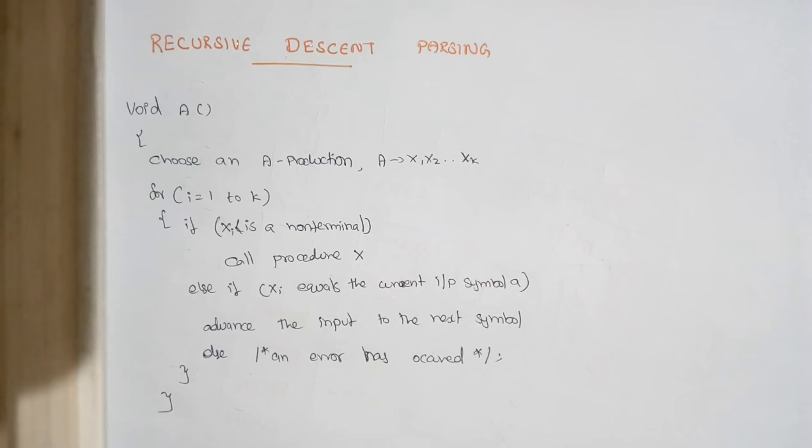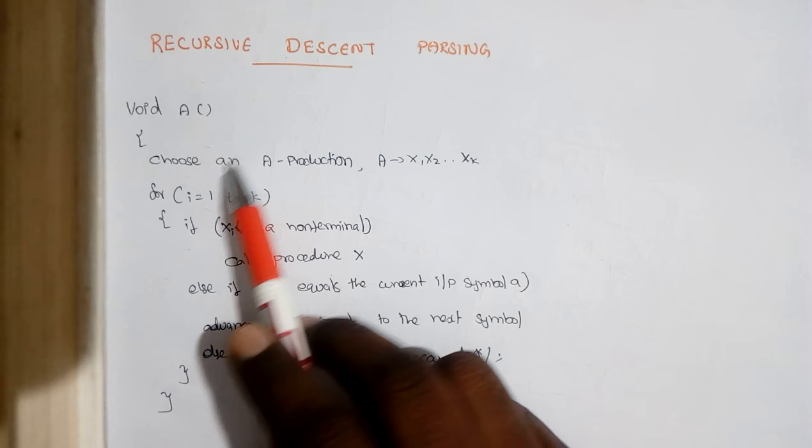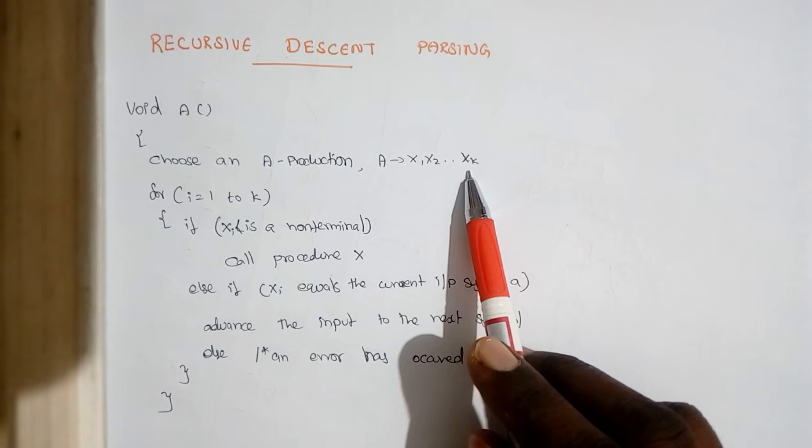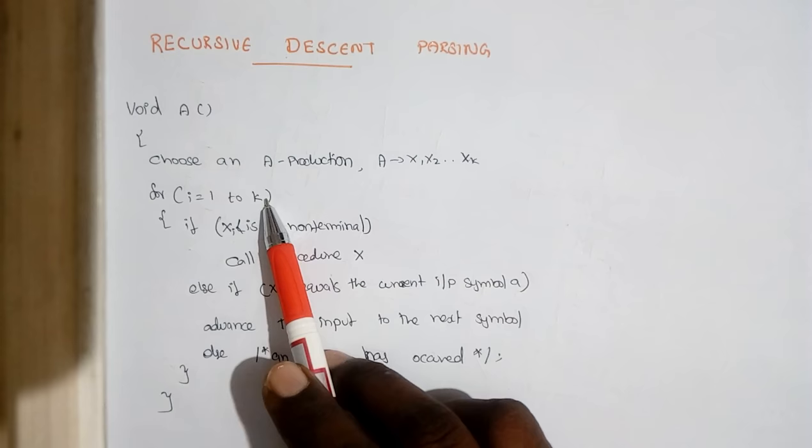It is a top-down parser, and recursive descent parser is a basic top-down parser. When you have a variable at the topmost element, if you want to make a substitution, we choose a prediction for that variable. Here we have x1 to xk for all 1 to k.